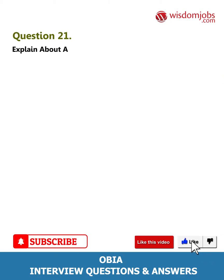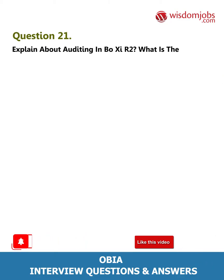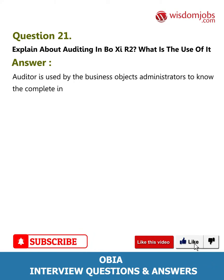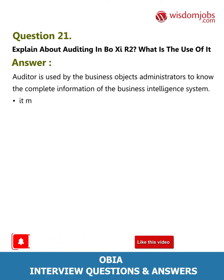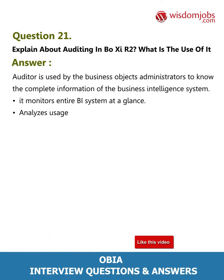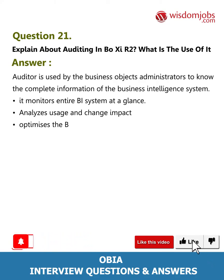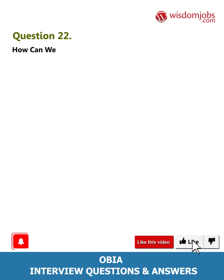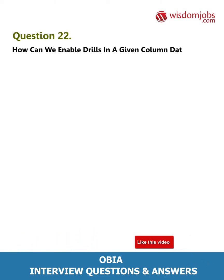Question 21: Explain auditing in Business Objects XI R2 and its use. Answer: The Auditor is used by Business Objects administrators to obtain complete information about the business intelligence system. It monitors the entire BI system at a glance, analyzes usage and change impact, and optimizes the BI deployment.